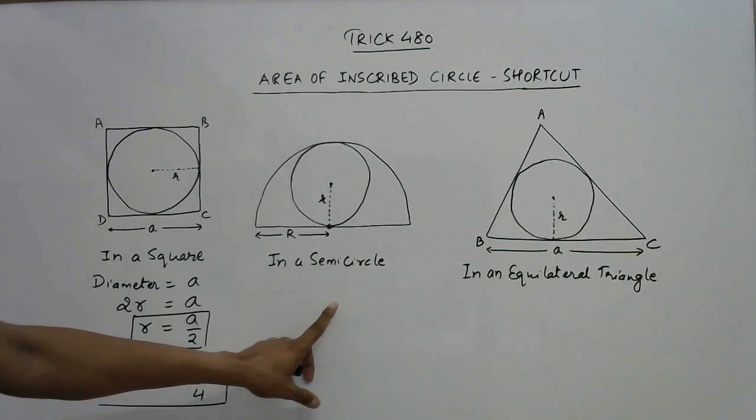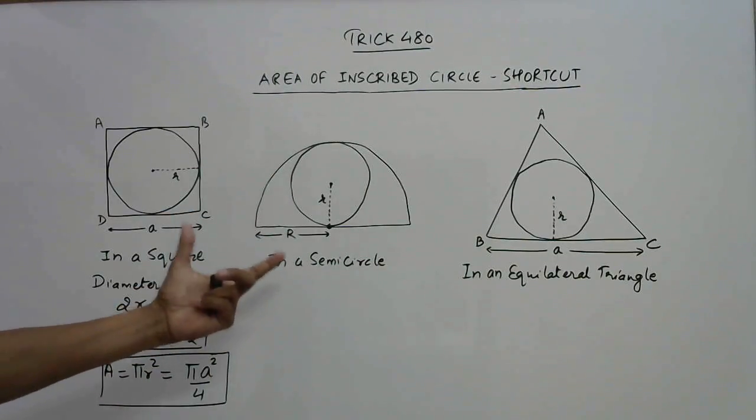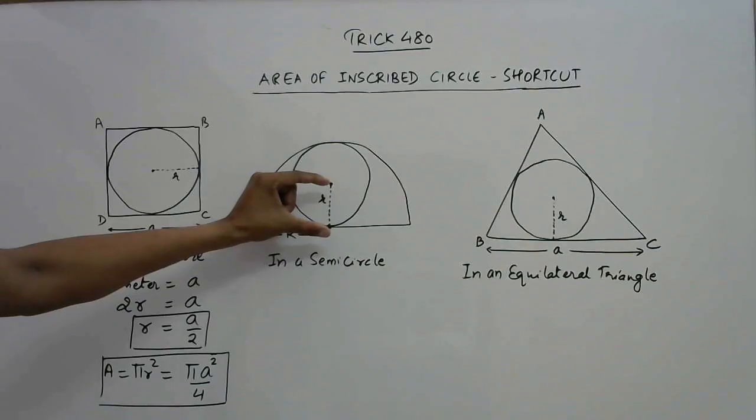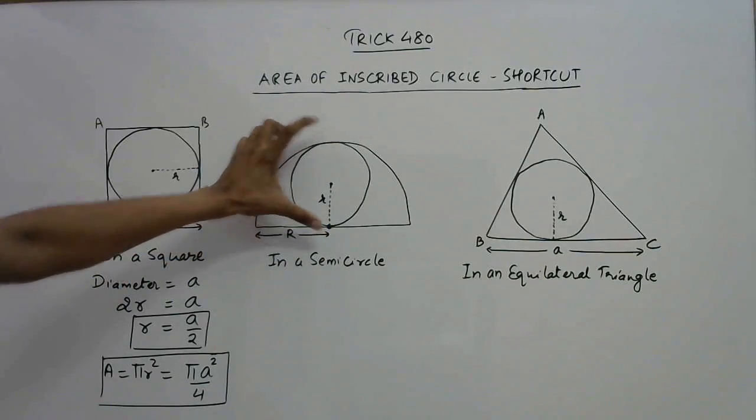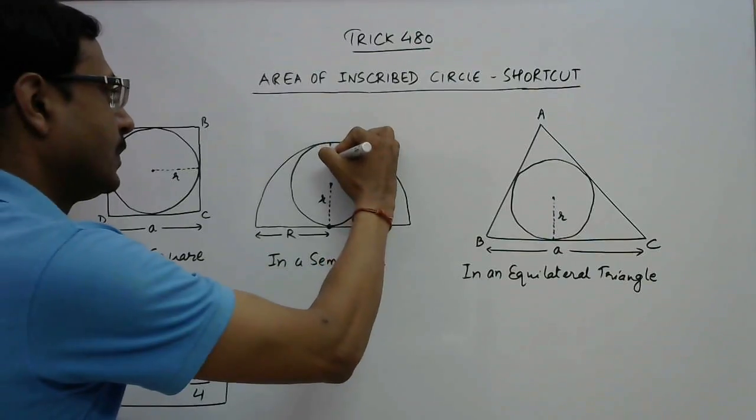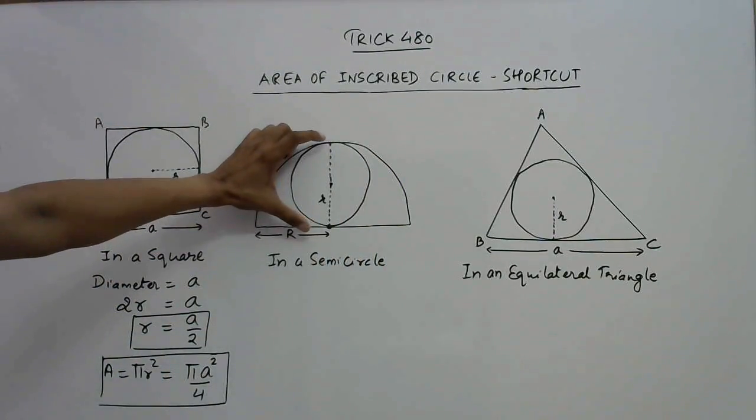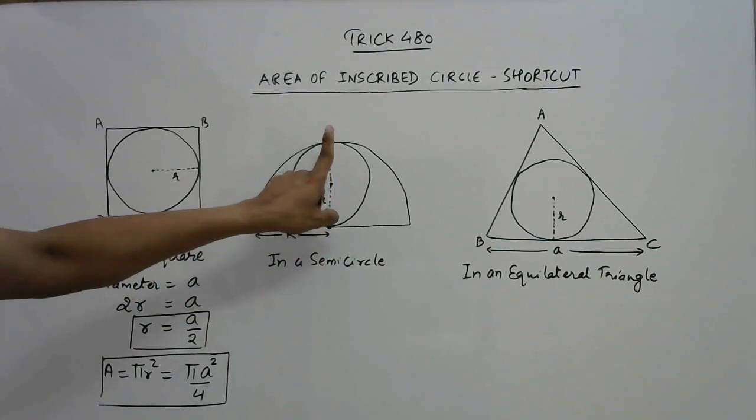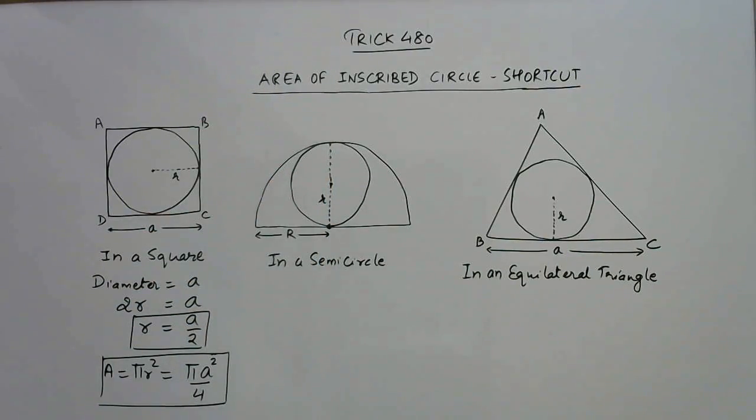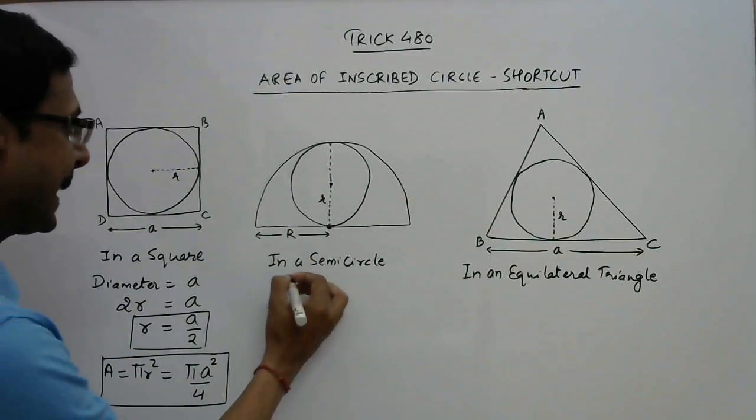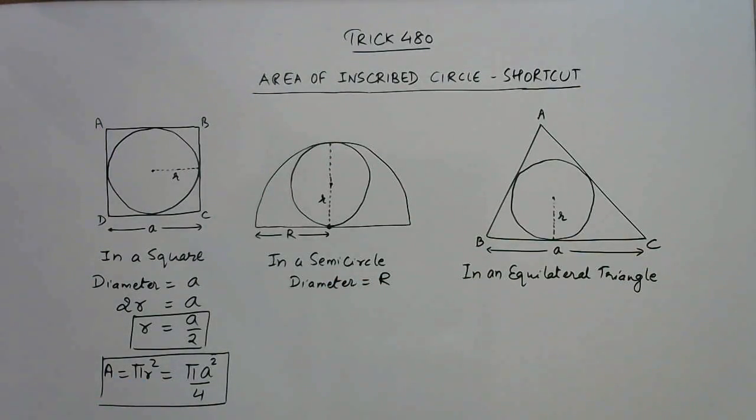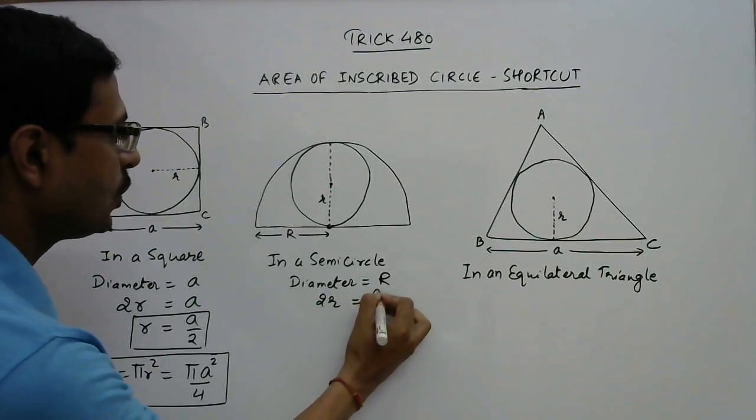Now come to the second figure in which we have the circle inscribed in a semicircle. The semicircle has a radius R, and again we assume that the radius of the inscribed circle is small r. Now if you extend this, this becomes the diameter of the circle, and it is also equal to the radius of the semicircle since it joins the center of the semicircle to its circumference. So the diameter of this circle is actually capital R.